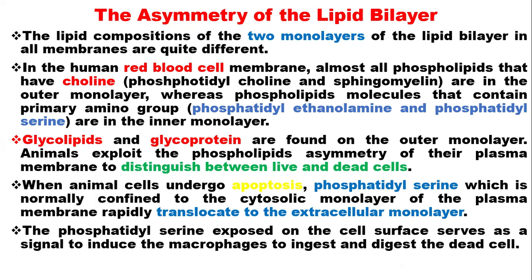Animals exploit this phospholipid asymmetry of their plasma membrane to distinguish between living and dead cells. Glycolipids and glycoproteins are found on the outer monolayer, which is the one interacting with the outside of the cell. Animals use this asymmetric property to distinguish which cell is dead and which is alive. When animal cells undergo apoptosis — programmed cell death — phosphatidylserine, which is normally confined to the cytosolic monolayer inside, rapidly translocates to the extracellular monolayer.